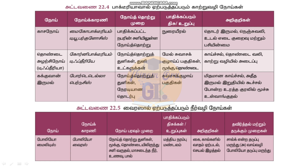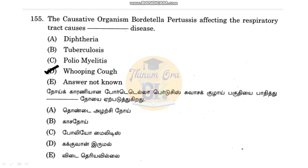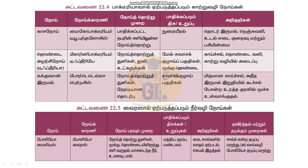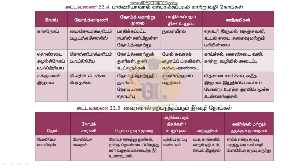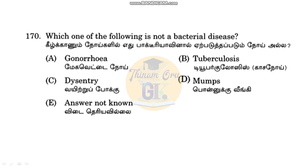Regarding disease classification by blood type: Mycobacterium tuberculosis causes tuberculosis. Diphtheria is caused by Corynebacterium diphtheriae. The question asks: which of these is a virus? Poliomyelitis is caused by Poliovirus — a virus that affects the central nervous system.